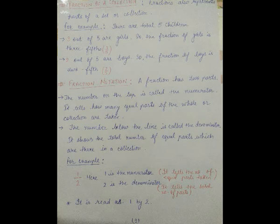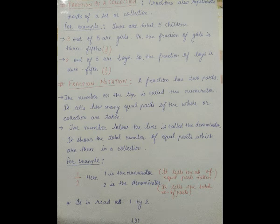Fraction notation: a fraction has two parts. The number on the top is called the numerator, and the number below the line is called the denominator. The numerator tells how many equal parts of the whole or collection are taken; the denominator shows the total number of equal parts. For example, if one is the numerator and two is the denominator, the fraction is written as one upon two and read as one by two, where one tells the number of equal parts taken and two tells the total number of parts.